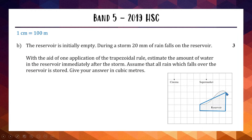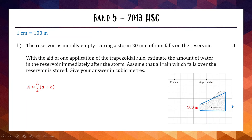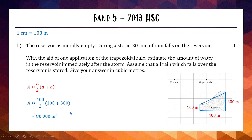We approximate the reservoir as a trapezium. The trapezoidal area formula from the reference sheet is: A = (h/2)(a + b), where a and b are the two parallel sides and h is the distance between them. Using the 1 cm = 100 m scale: a = 100 m, b = 300 m, and h = 400 m. Substituting: (400/2) times (100 + 300) = 200 times 400 = 80,000 square meters.